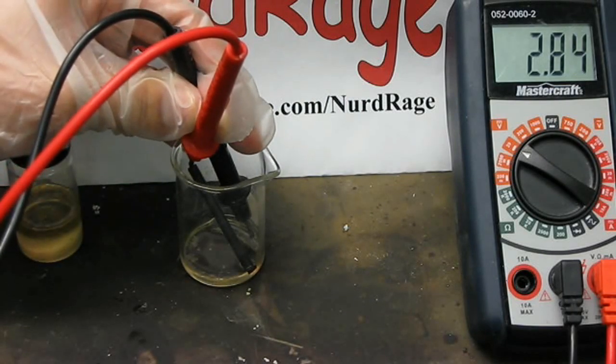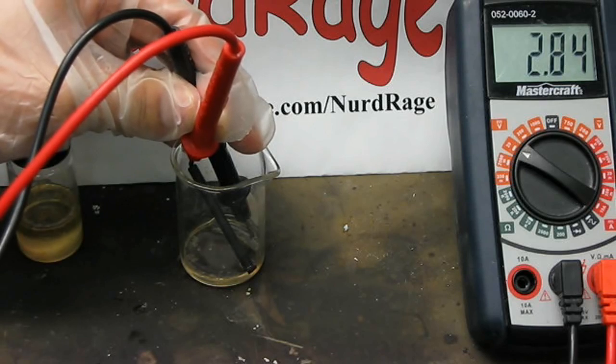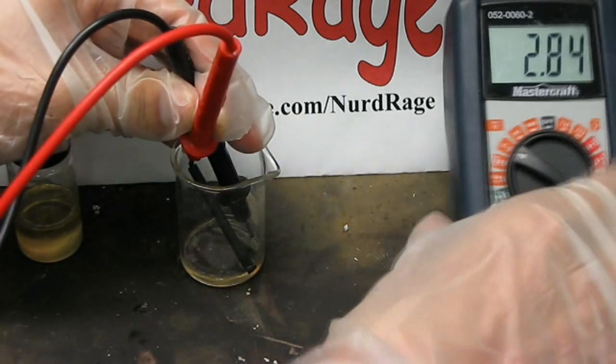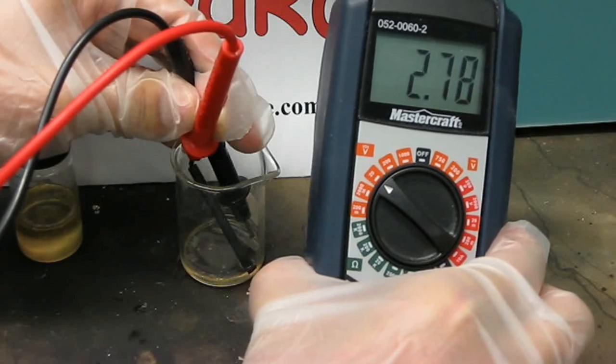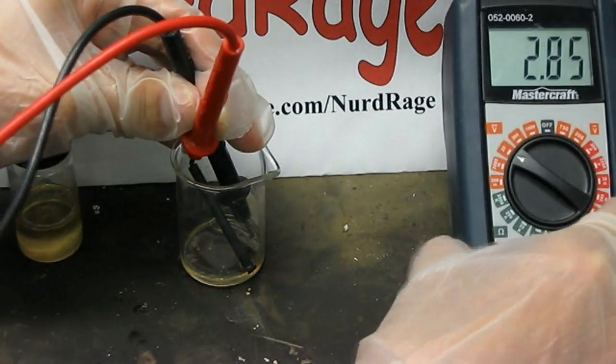And it looks like the voltage is around 2.8 volts. It's not very stable and should be closer to 3.5 volts. But this solution of theonyl chloride is very impure, resulting in these poor readings.